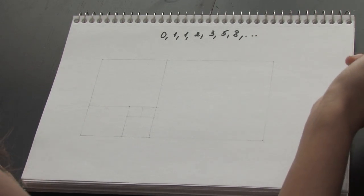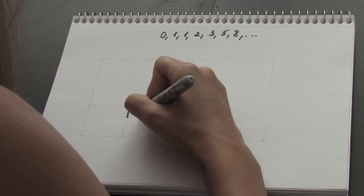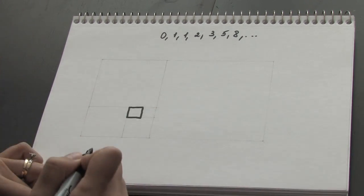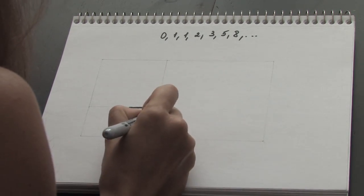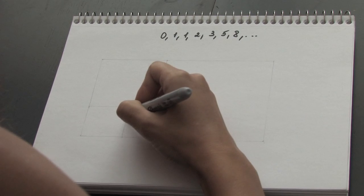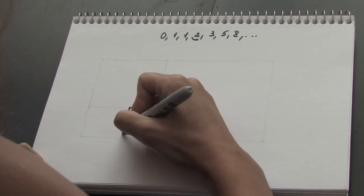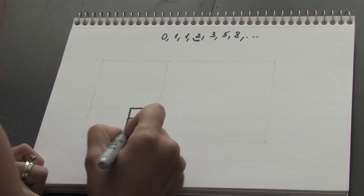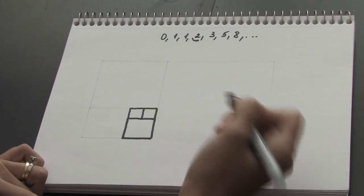So I'm going to draw the squares using these numbers. First I draw a square one by one unit in measure, and one more square right next to my first square with the same measure. Then the next number is 2, so I draw the square under my first two squares with 2 by 2 units in measure.